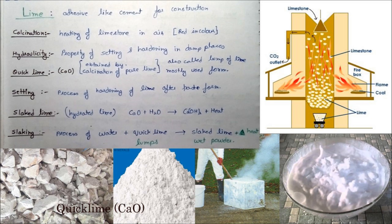Quick lime is called calcium oxide — it is the purest form of lime. Setting time refers to the process after water is added to lime paste, which initiates setting. Slaked lime is called hydrated lime. When water is added to calcium oxide, this process is known as slaking. During slaking, a large amount of heat is developed — it is a highly exothermic reaction. Sometimes when water is added, many bubbles form and the temperature of the water rises.